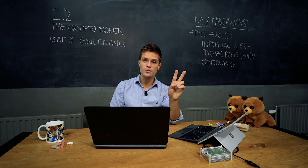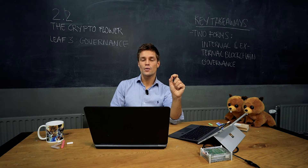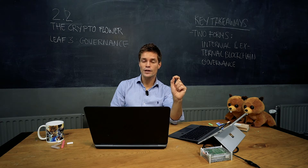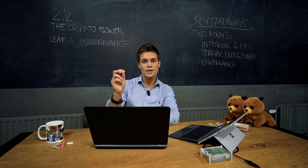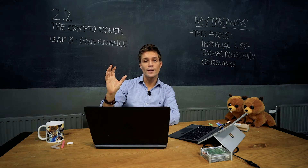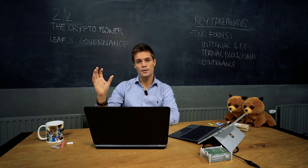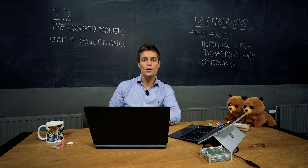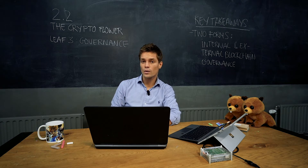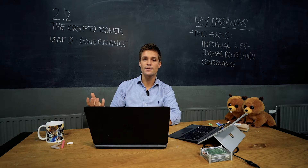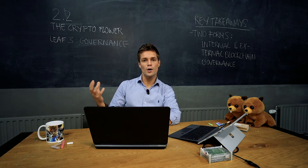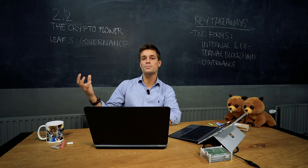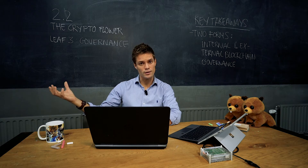So two types of governance: internal governance that affects the blockchain itself directly, and external governance — the outside world that gets affected by the blockchain. For example, reinventing organizations, reinventing money, or restructuring society are all examples of new forms of governance made possible by blockchain technology.